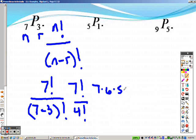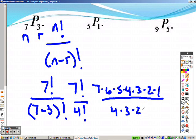7 times 6 times 5 times 4 times 3 times 2 times 1 over 4 times 3 times 2 times 1. Well, the reason why I have you writing it out for this example is because they both have something in common.